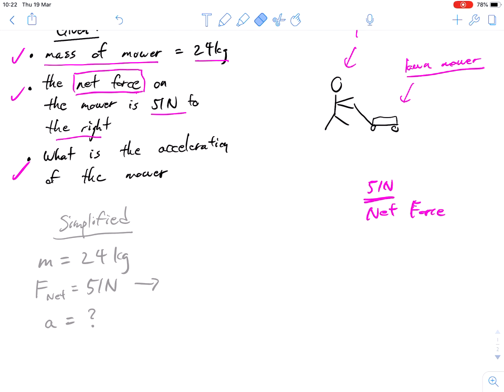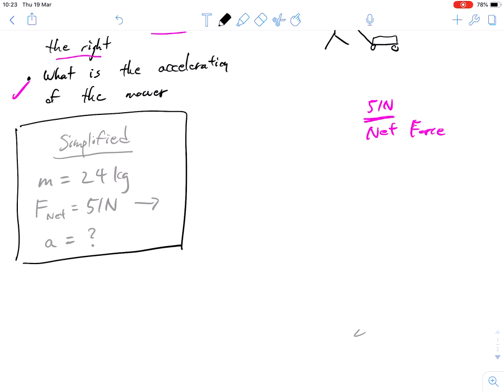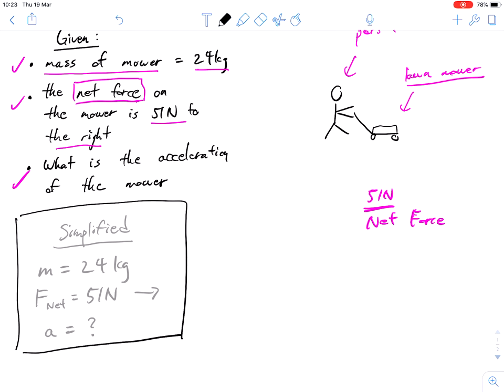So what I'm going to do now is simplify all of that wordy stuff into something more simplified. This is using some of the different variables and units that you learned last time. So we're transferring the information here. The mass of the mower is 24 kilograms. So I'm just transferring that down here.